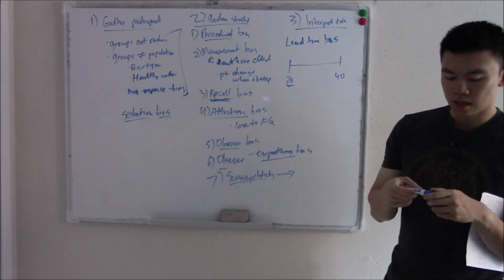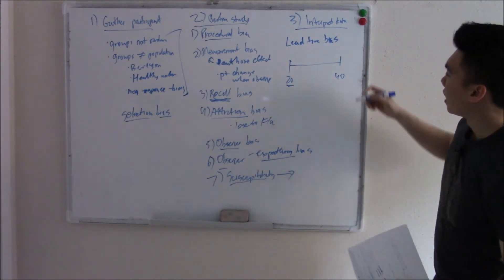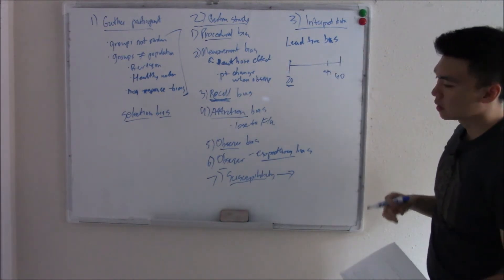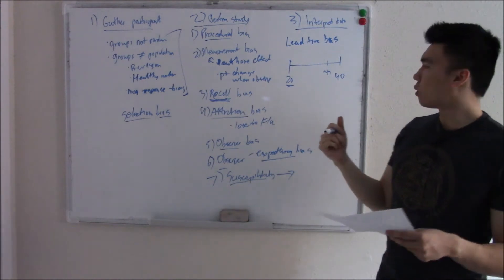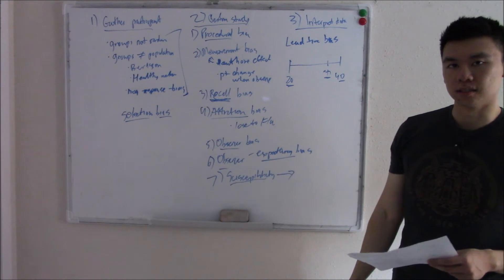Now researchers don't know this, don't know about this disease. So they develop a test to try and pick it up. And their most sensitive test picks it up when they're 35. And they say, whoa, anytime we pick it up, people die within five years of this disease.